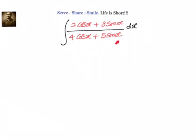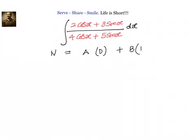How to solve this type of problem? Whenever we have a cos x plus b sin x divided by c cos x plus d sin x, what we will try to do is write down the numerator as a constant A into the denominator plus some constant B into the derivative of the denominator.